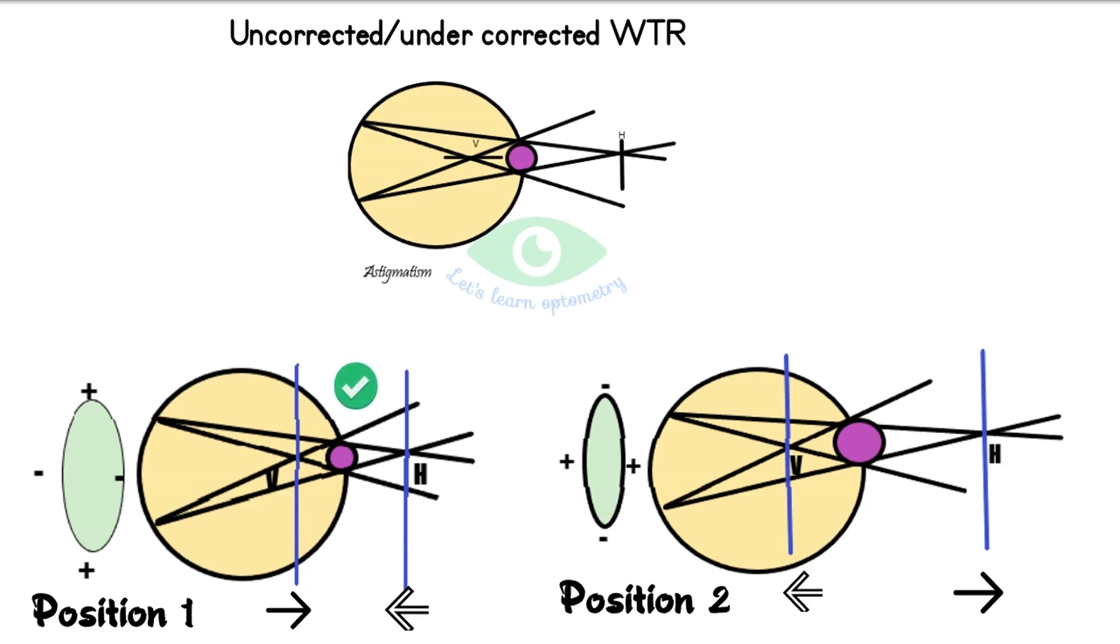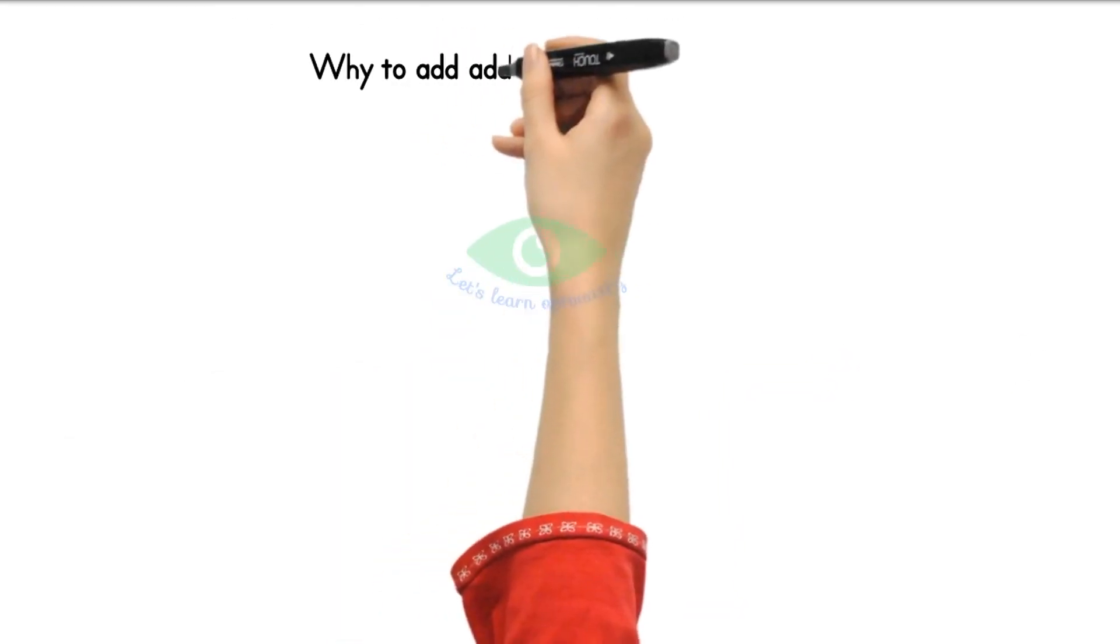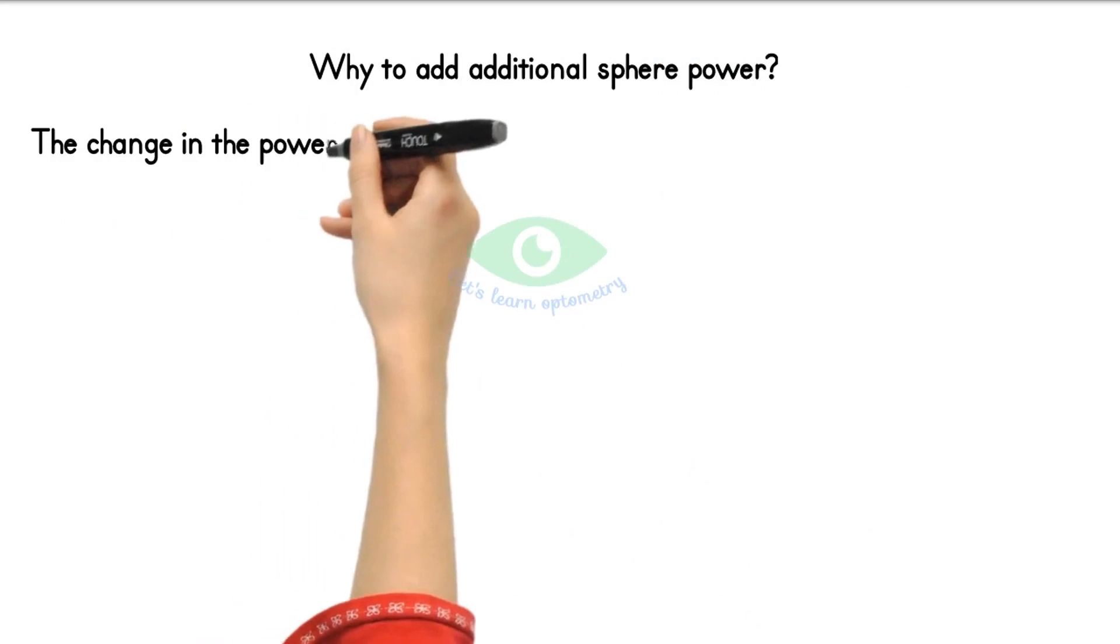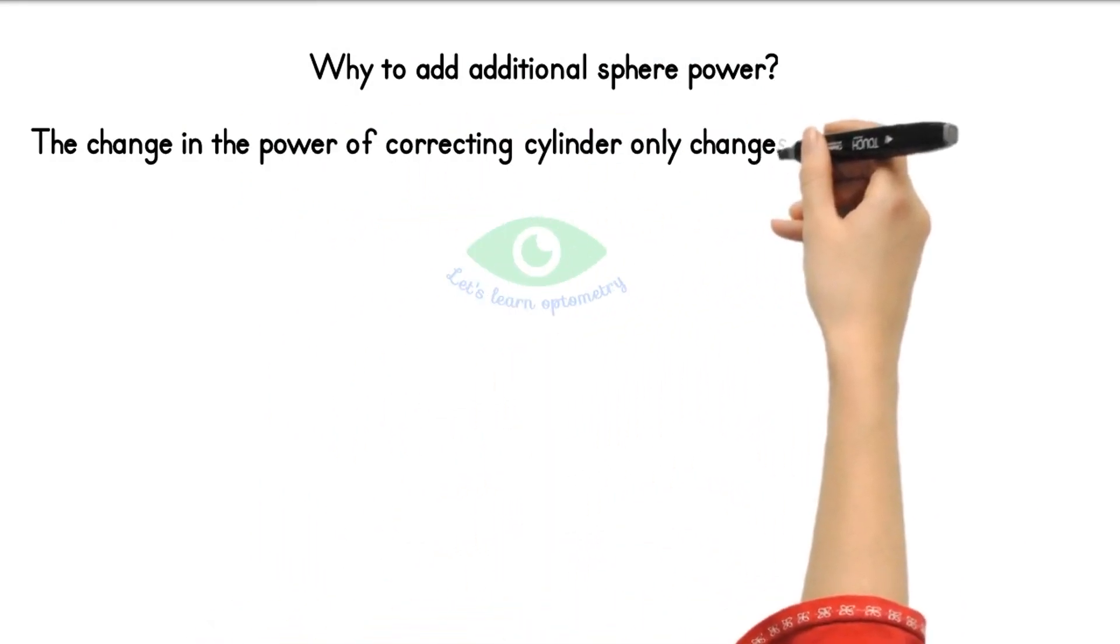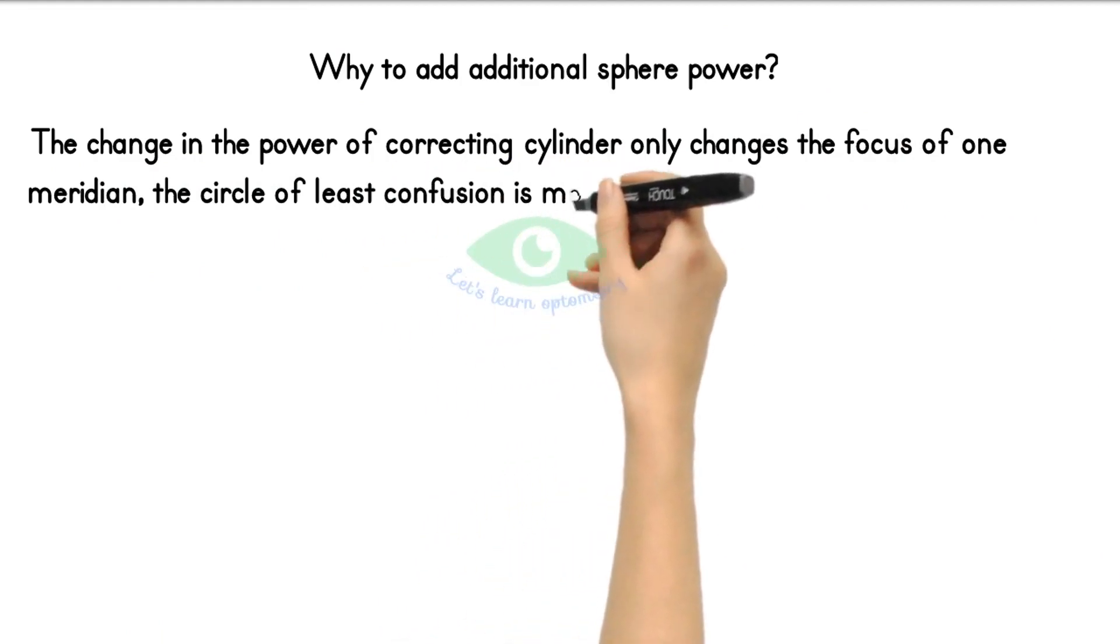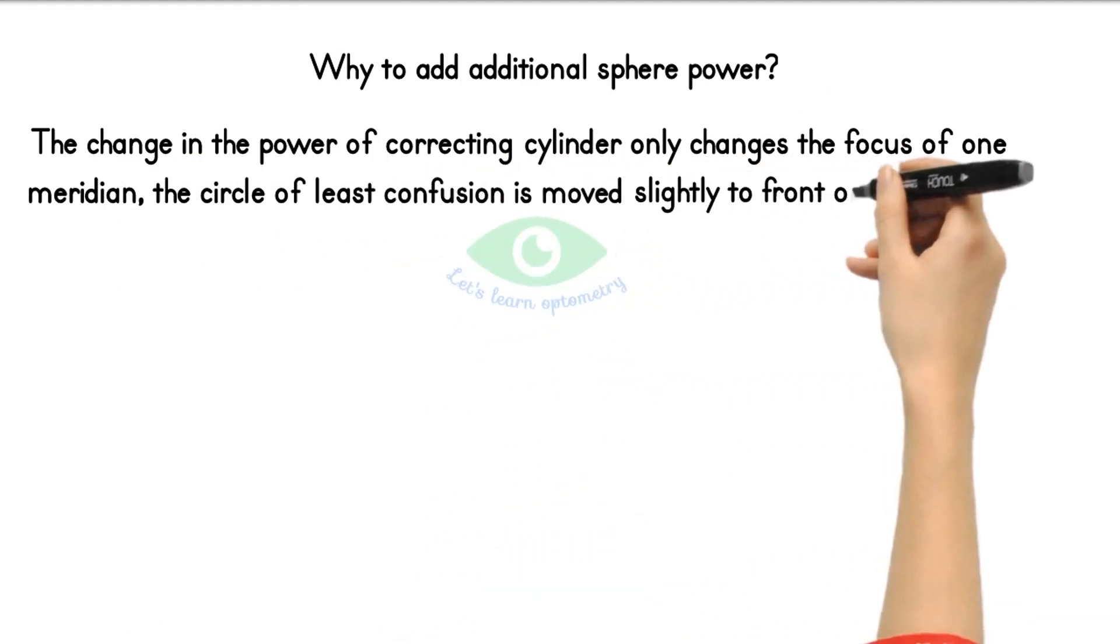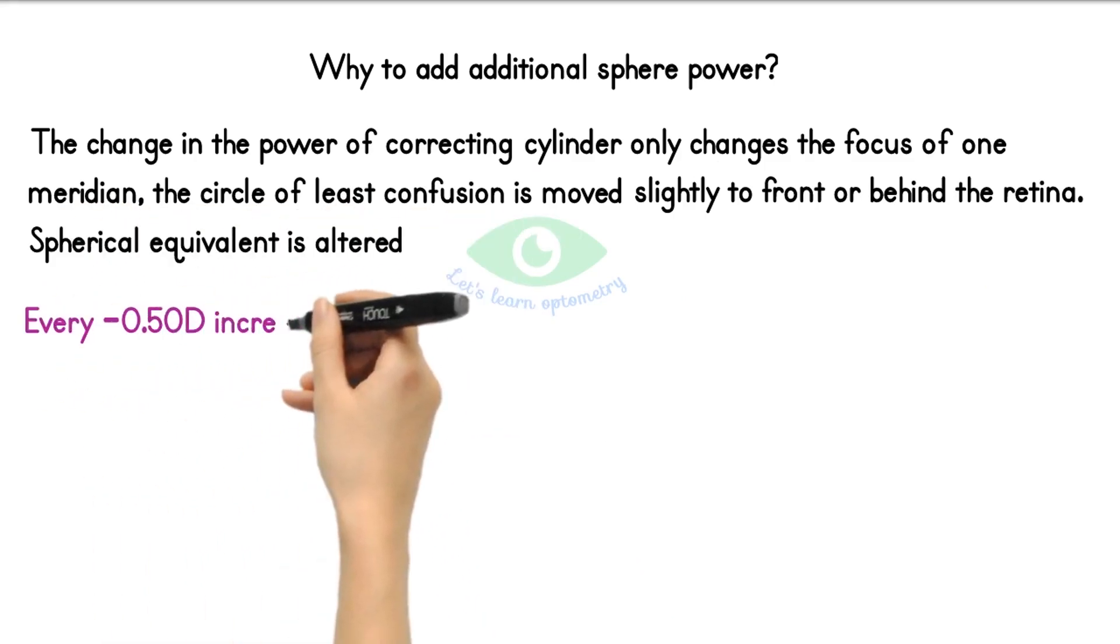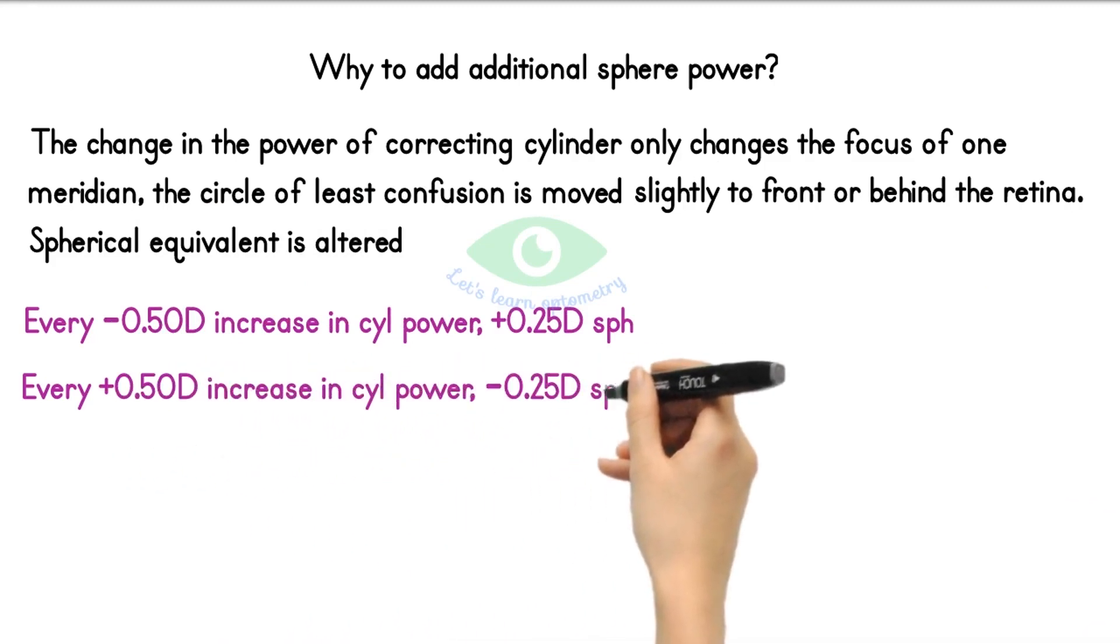Why add additional spherical power during power refinement? The change in the power of correcting cylinder only changes the focus of one meridian, and the circle of least confusion is moved slightly to the front or behind the retina. Thus the spherical equivalent is altered. So spherical power is added based on the changes in the cylindrical power.